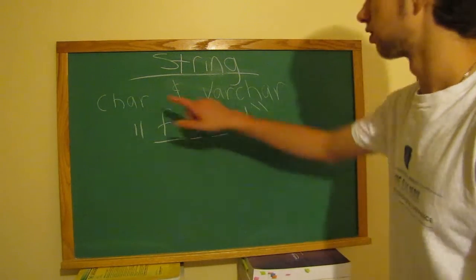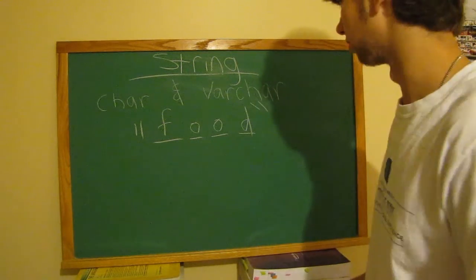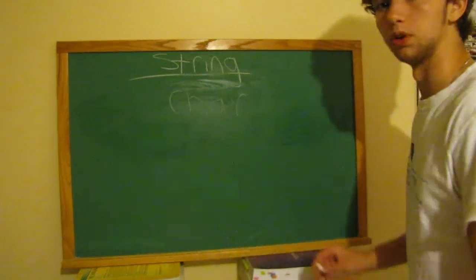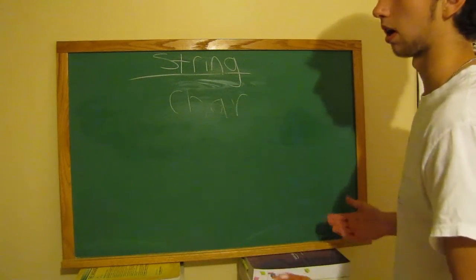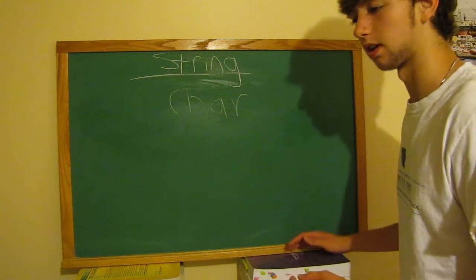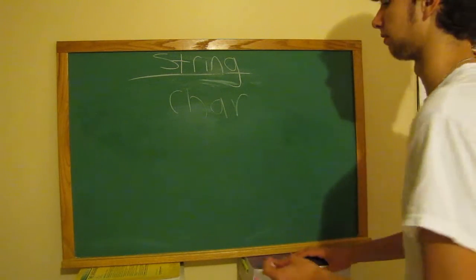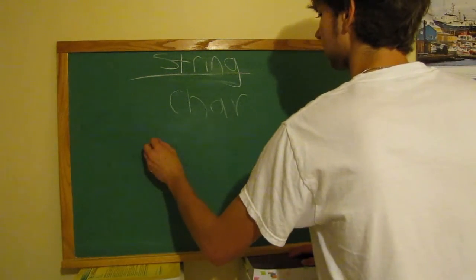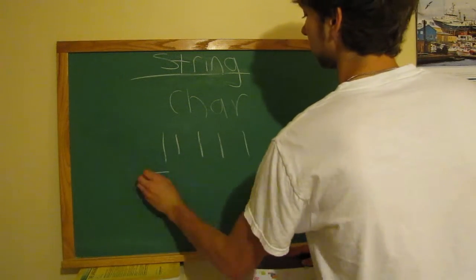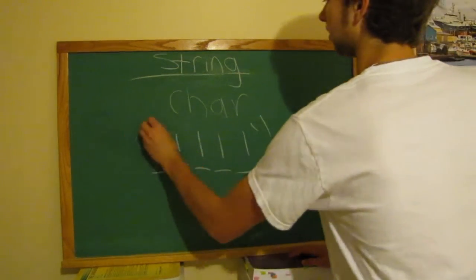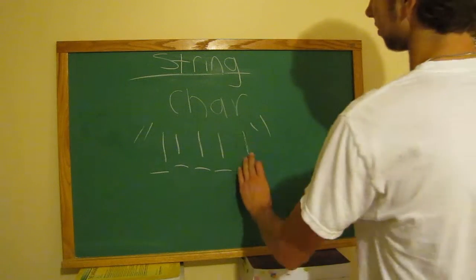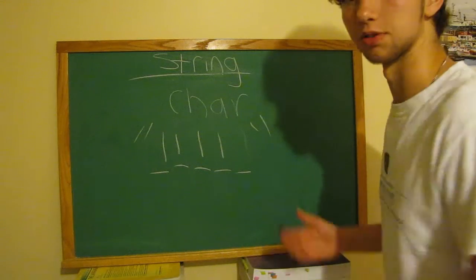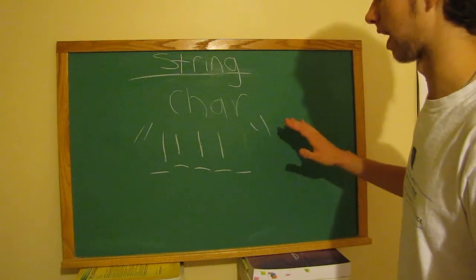Char needs more space on your system because it's storing those extra spots. Char will retain spaces. It's recommended to use char when things are a set amount of characters - such as a zip code, which should always be 5 digits. If it's 4, something's been entered wrong. Storing exact-length characters with char is more effective and faster.